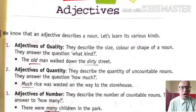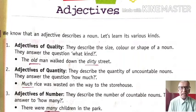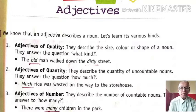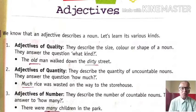The old man walked down the dirty street. Here two words are there as adjectives: old and dirty. Old describes man — the old man — and dirty is describing street. So in this way, if we ask what kind of man, then an old man. What kind of street it is, so it is a dirty street. So in this way, by asking what kind, we can get the answer.